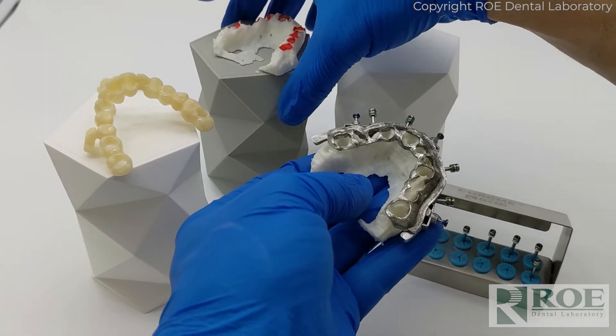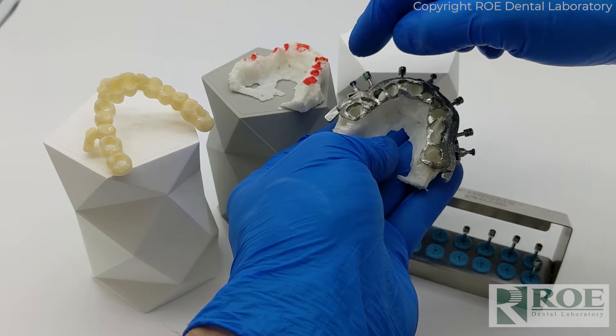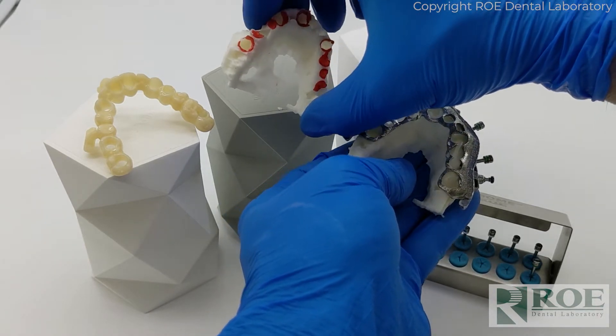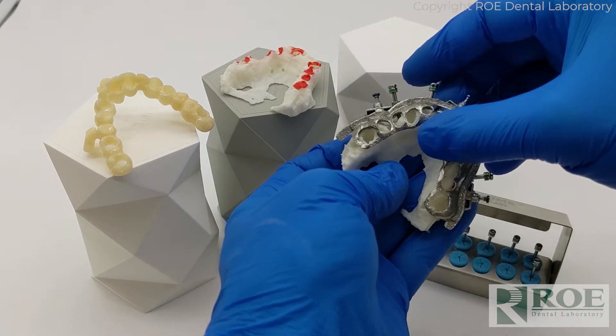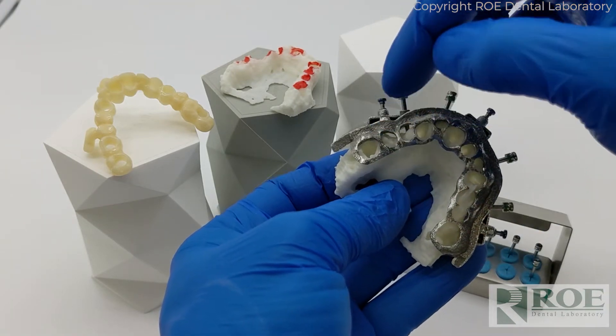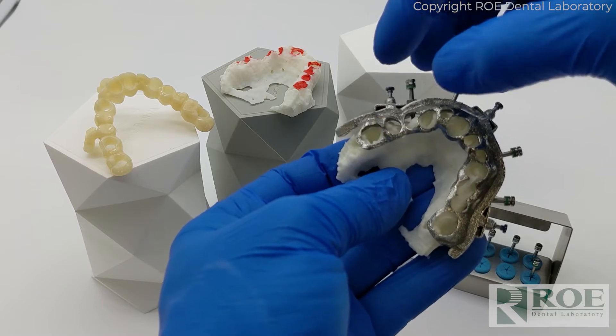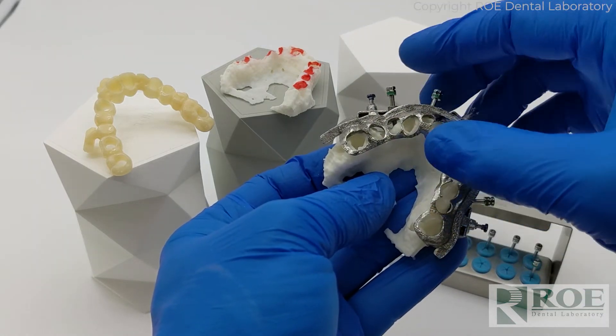In this site here we opened up the socket a little bit in red. Here on this site, as you can see right inside of this site here, maybe number three or four, there's just some bone there in the way that will affect the pontic design of the restoration.